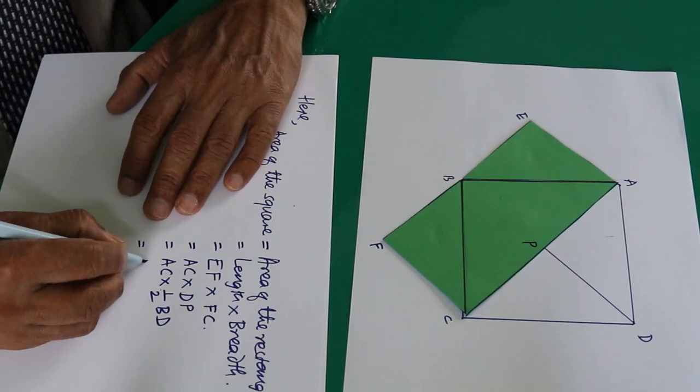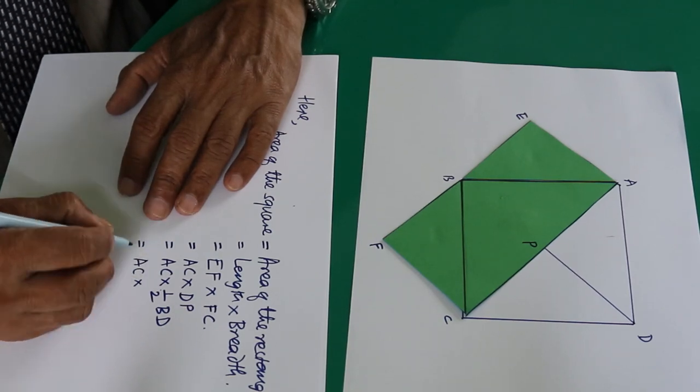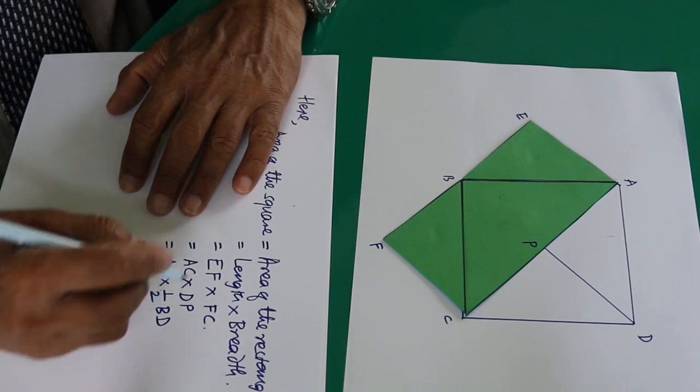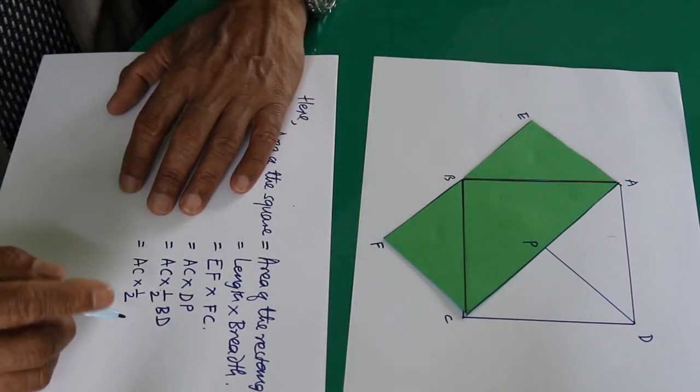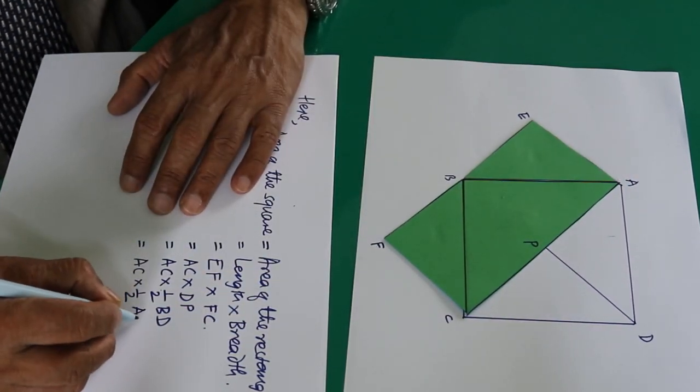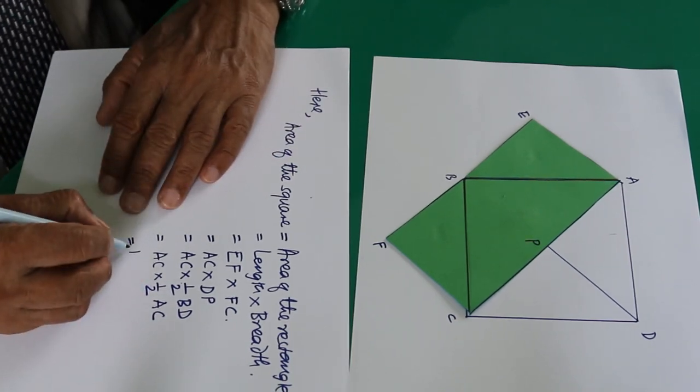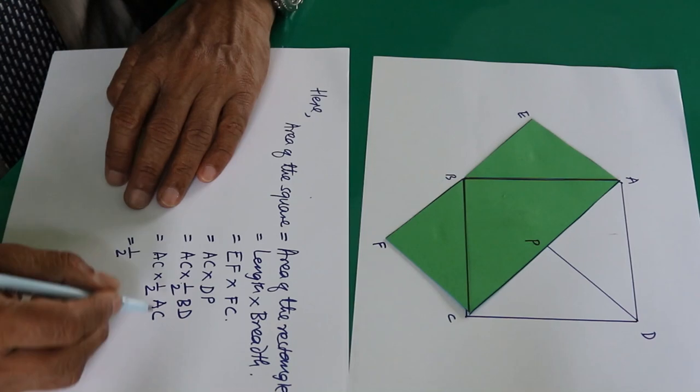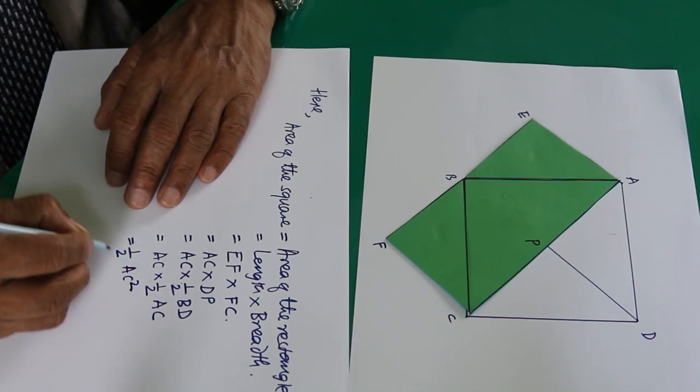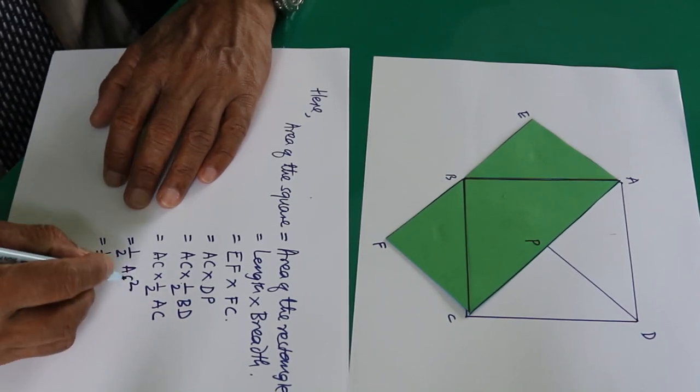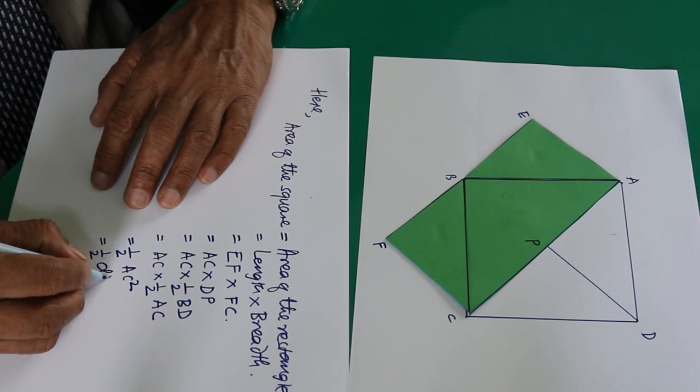AC, and this half comes to the front as a coefficient: one-half times AC times AC, which is AC squared. So the area equals half of the diagonal squared. Therefore, the area of the square is one-half times diagonal squared. This is the generalization we wanted to derive today.